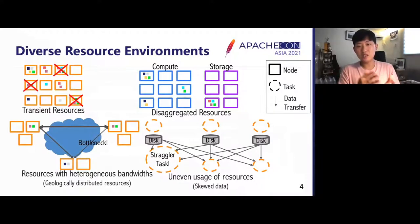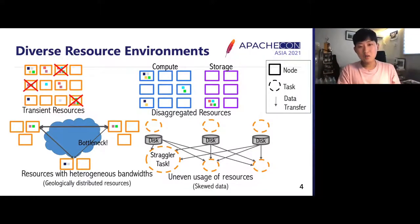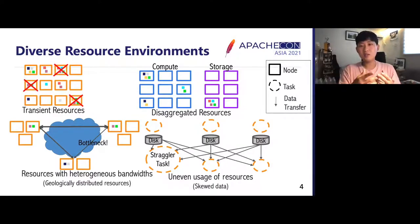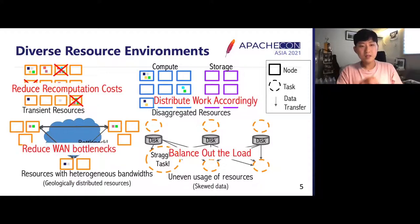For example, one can use cheap transient resources collected from idle resources in data centers which can be evicted at any time, or run applications on data centers where computing and storage resources are disaggregated and managed separately, or run applications in data centers distant from each other connected with heterogeneous network bandwidths, or face a skewed dataset where a specific key is overly popular — and the list can go on and on.